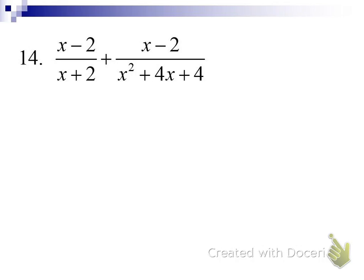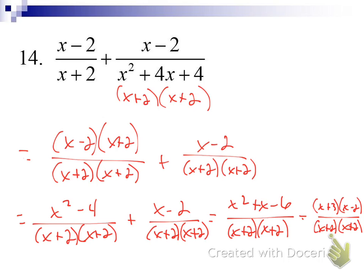For number 14, go ahead and add the two fractions — find the common denominator, add and combine like terms, try to simplify. You should get (x + 3)(x − 2) over (x + 2)². The common denominator was (x + 2)(x + 2). The first fraction was missing one (x + 2), so FOIL out (x − 2)(x + 2) to get x² − 4. The second fraction stays. Combine like terms. Factor the numerator — it doesn't divide out with the denominator, so that's your final answer.